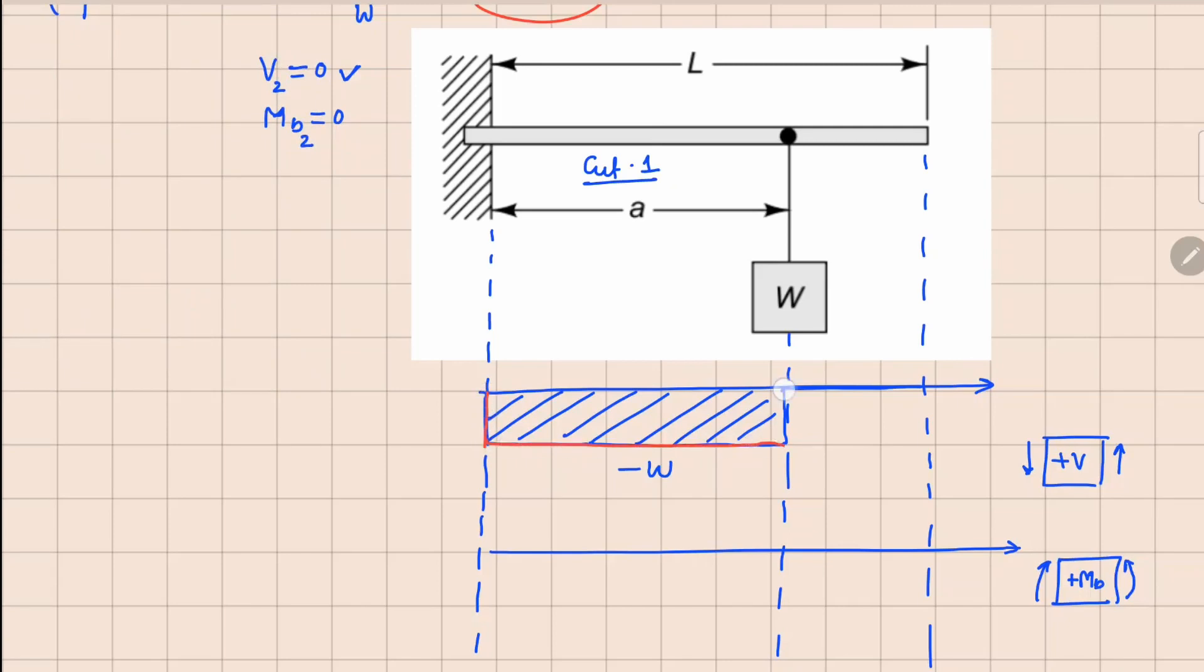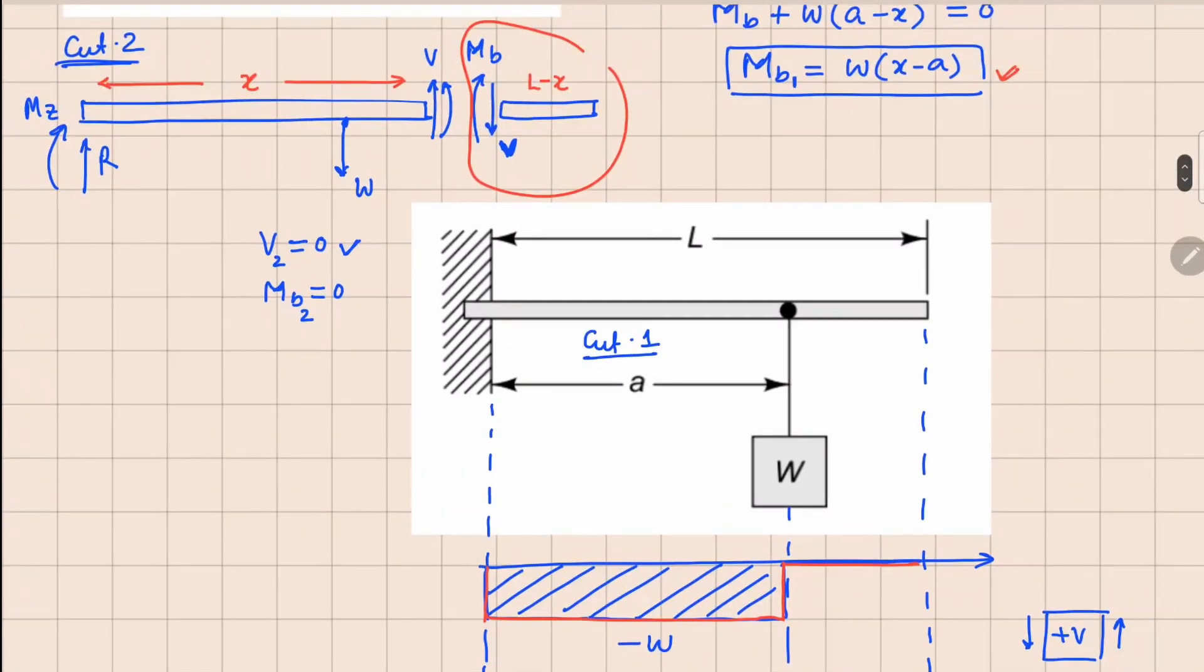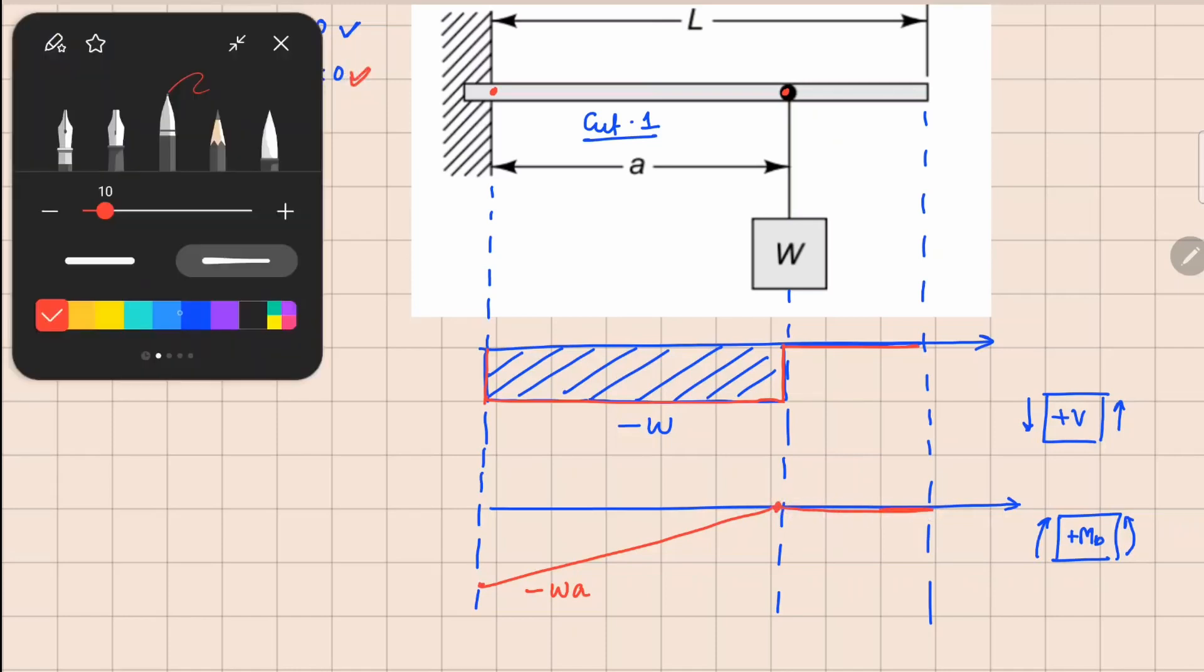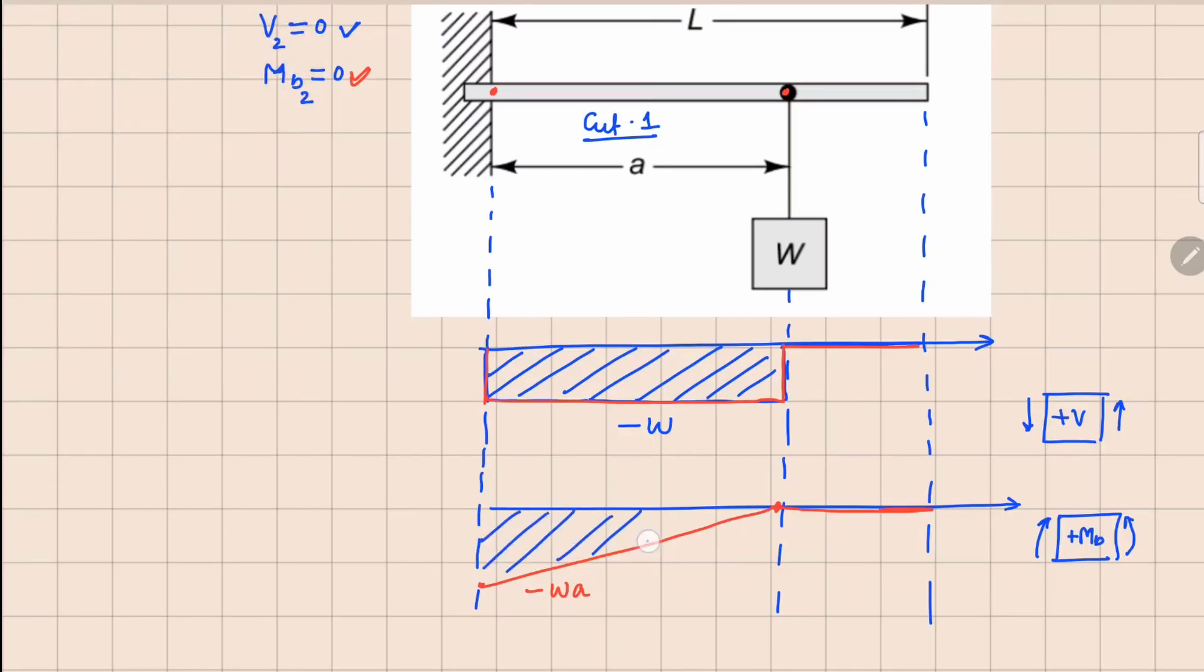Now for the moment, MB1 is W times x minus a. This is valid for cut one, so these are the boundaries here. I can evaluate this at x equals to zero and x equals to a. At x equal to a this becomes zero, and at x equals to zero this becomes minus W a. So I will start somewhere here and go in this manner. This value is minus W a, this is zero, and your MB2 value coming from here is zero right here. So this is how your bending moment diagram looks for this beam.